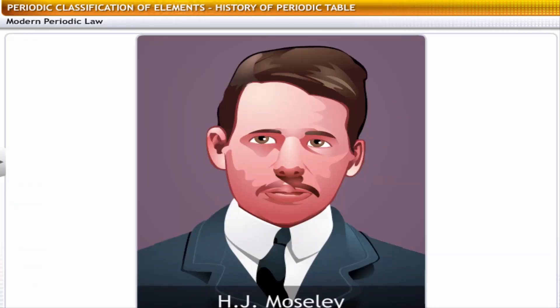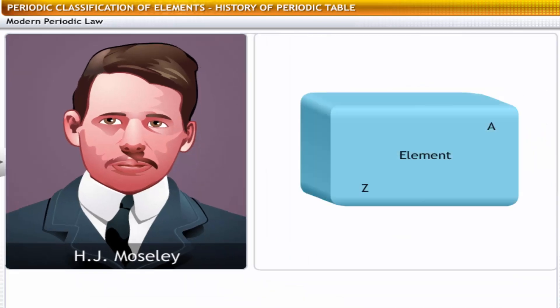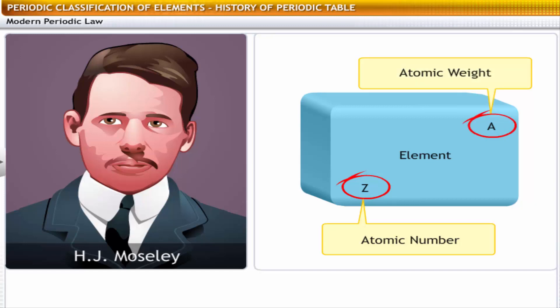H.J. Moseley, an English physicist, built further on the periodic table to resolve the problems encountered in using it. He discovered that atomic number is a better basis for classifying elements than atomic weight. On the basis of his work, he developed the modern periodic law.